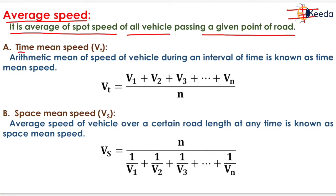The first average speed is time mean speed, denoted by Vt. Arithmetic mean of speed of vehicle during an interval of time is known as time mean speed. It can be determined by adding all the spot speeds and dividing by the number of vehicles passing through that cross section of the road.